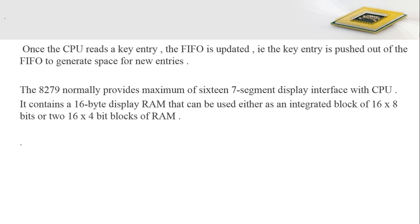The 8279 normally provides a maximum of 16 seven-segment display interfaces with the CPU. Regarding display interfacing, it contains a 16-byte display RAM that can be used either as an integrated block of 16 bytes as a single unit or as two 8-byte units of RAM. This 8279 supports seven-segment display interfacing with the CPU — up to 16 seven-segment displays — using a single block of 16-byte RAM or two 8-byte RAM units.